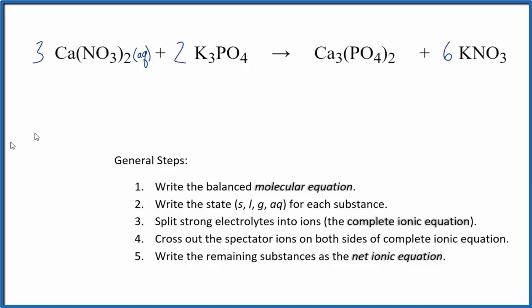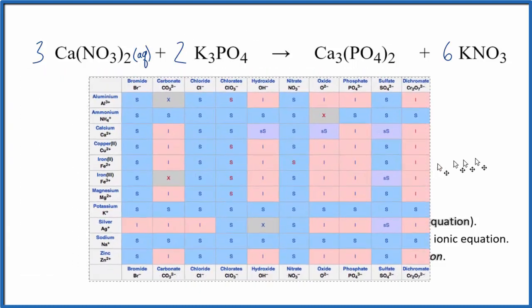Let's check the potassium phosphate, see what happens with that. So this is a solubility table and we can find potassium right here and then phosphate right here.